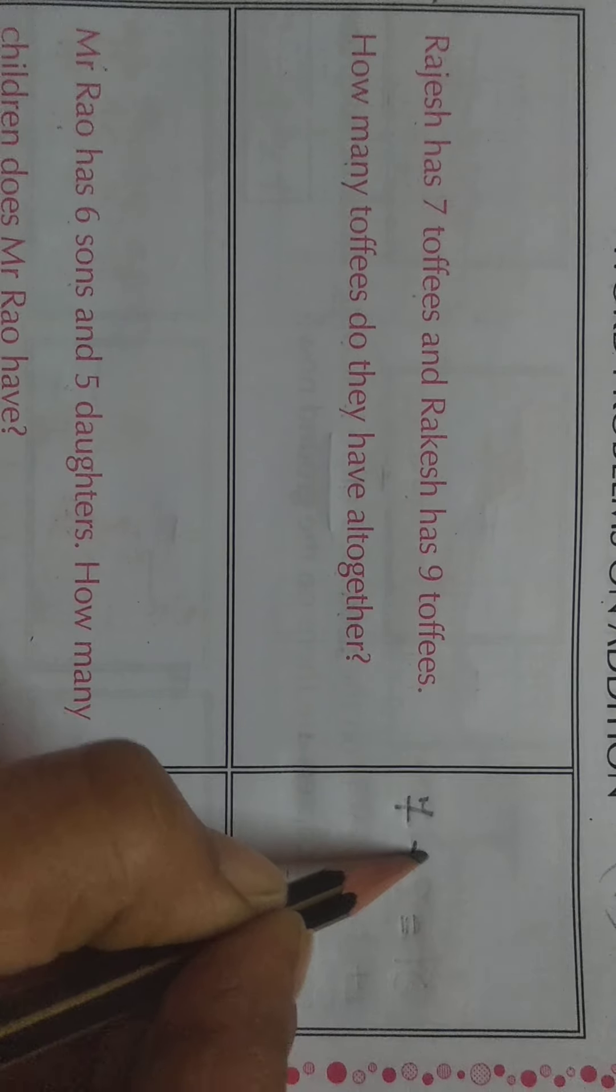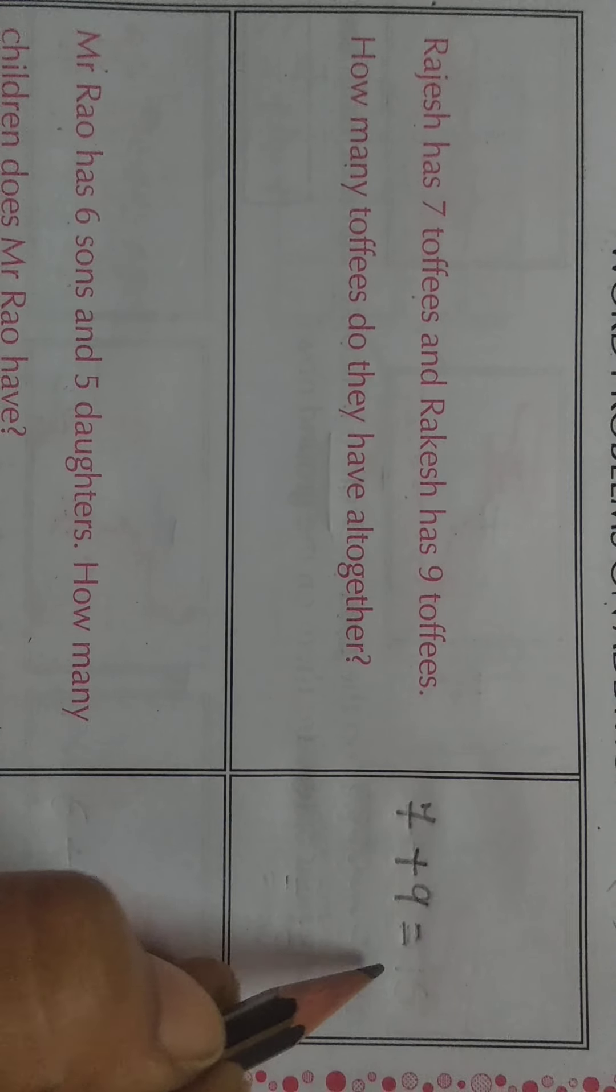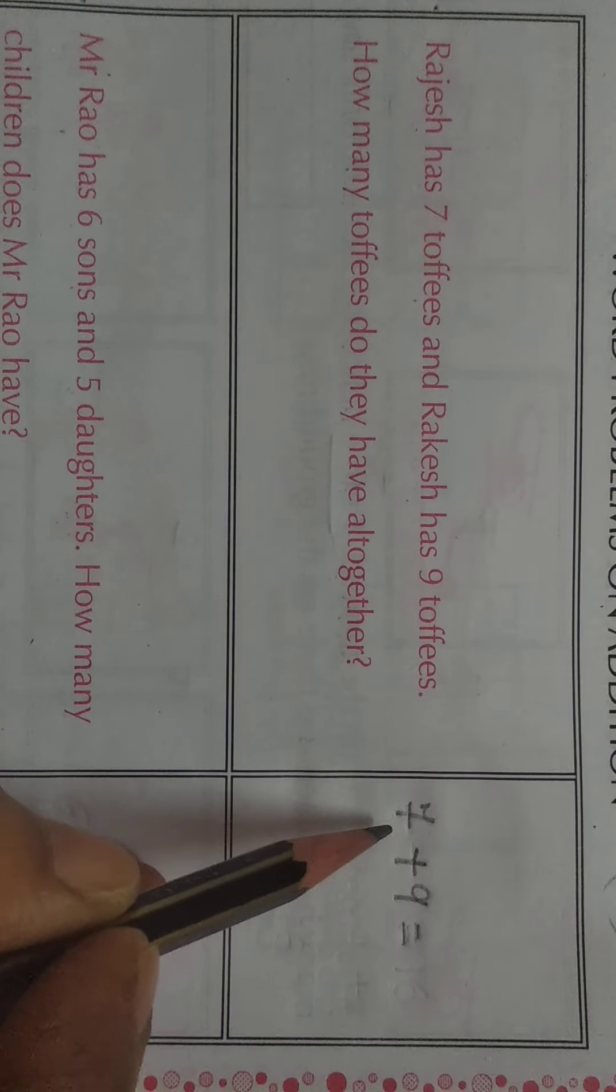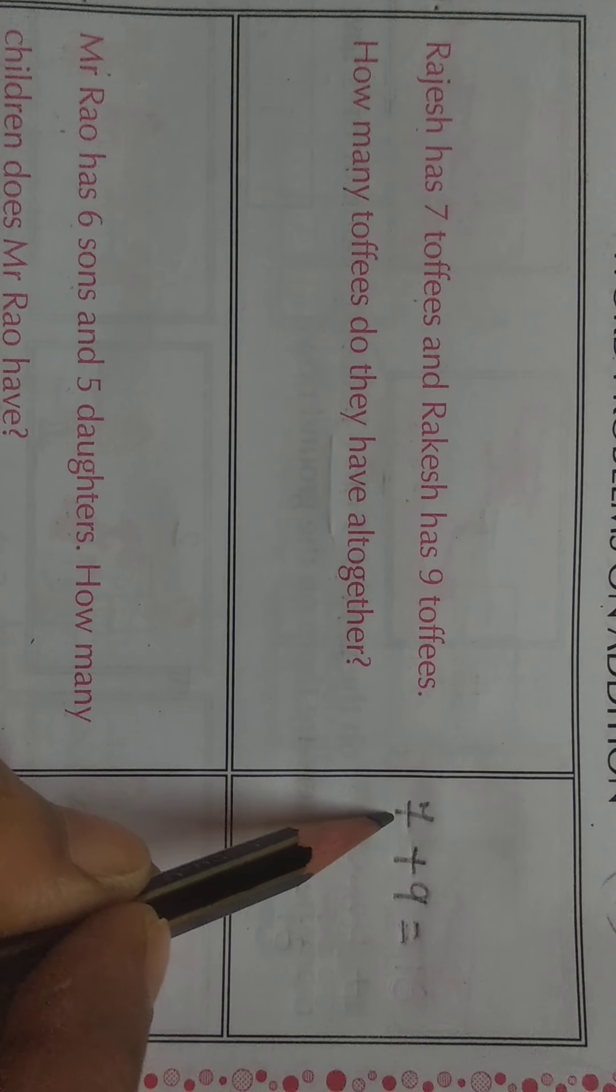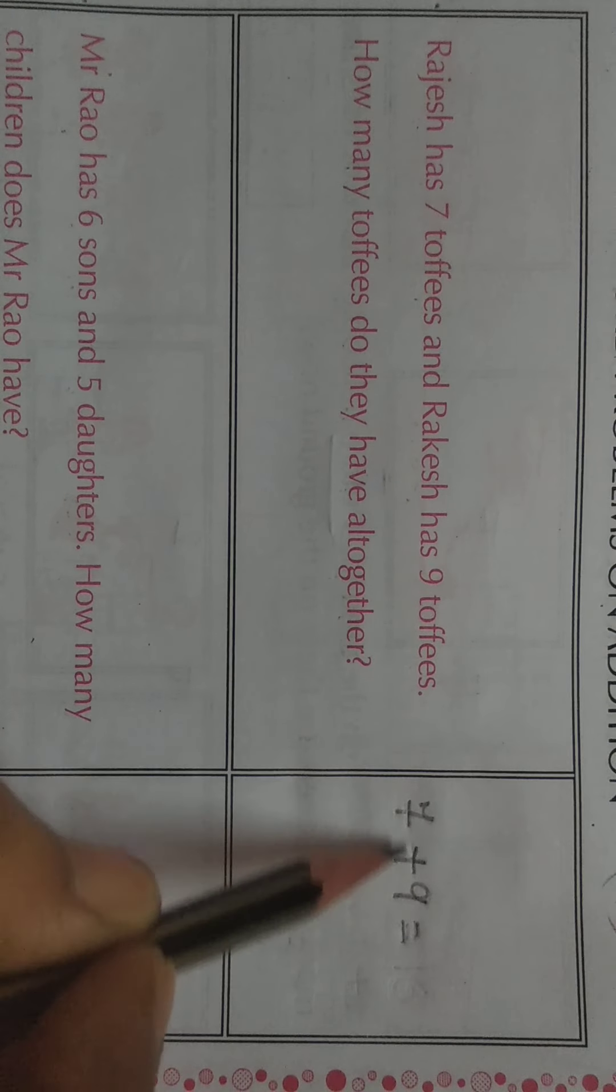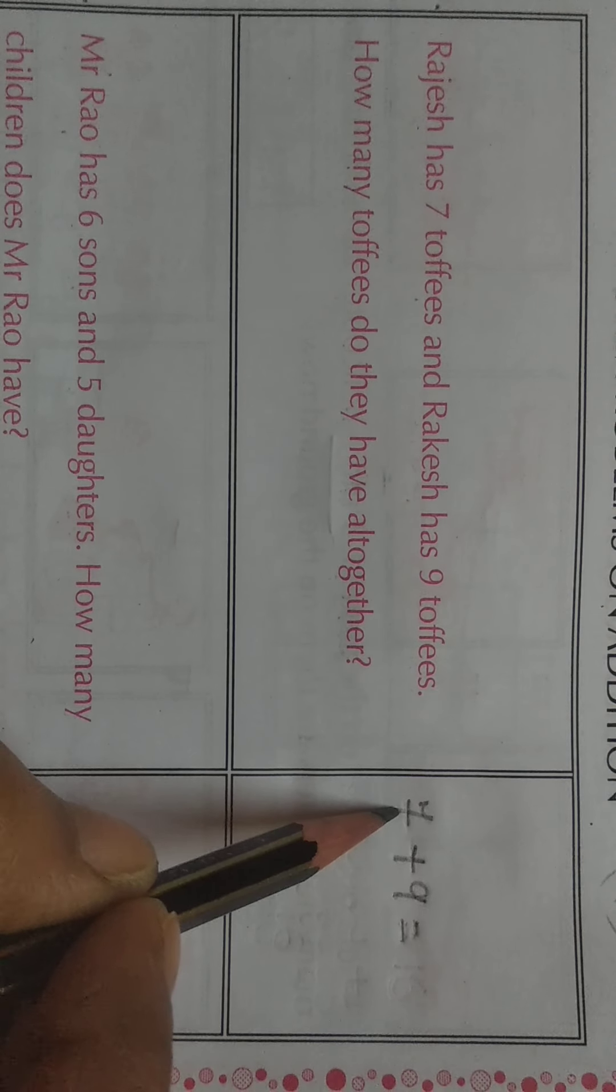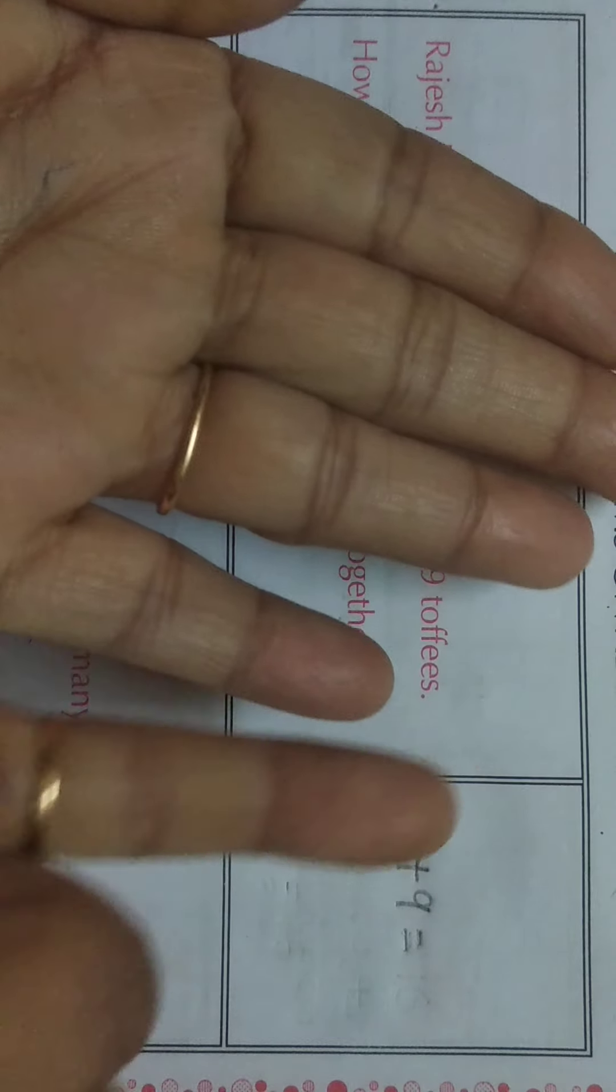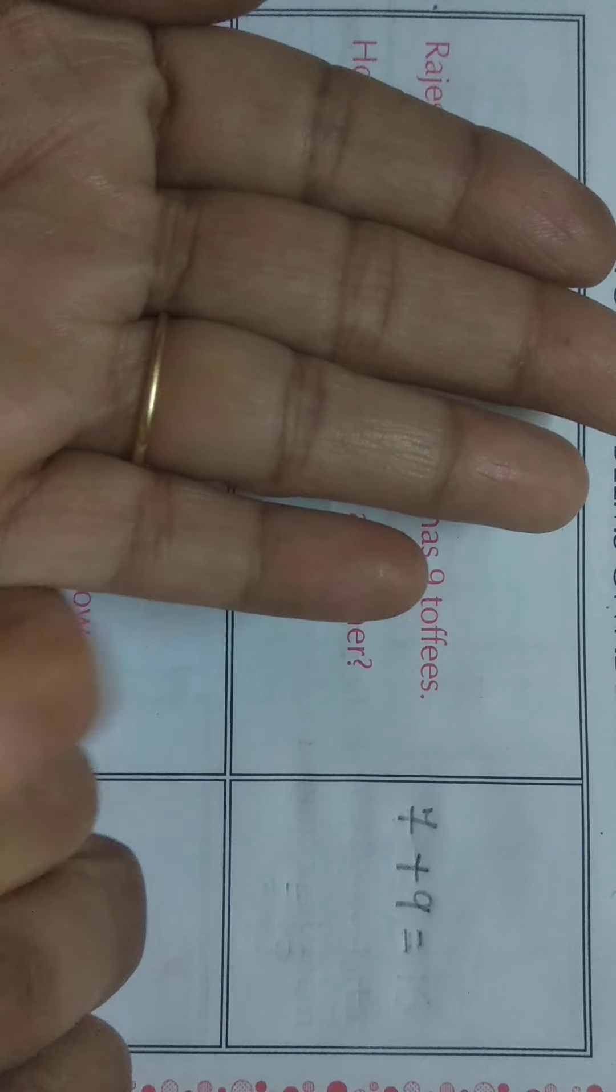Dono ke paas kul milaker kitne toffies hai? Milaker means we will add these two numbers. 7 plus 9 is equal to what is the answer? I have already explained you, for addition we will count forward counting. We have to keep 7 in our mind and we will count 9 numbers after 7. So keep 7 in your mind, after 7: 8, 9, 10, 11, 12, 13, 14, 15, 16. After 7, we have opened 9 fingers. The answer is 16.